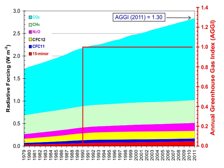Water vapor accounts for the largest percentage of the greenhouse effect, between 36% and 66% for clear sky conditions and between 66% and 85% when including clouds. Water vapor concentrations fluctuate regionally, but human activity does not directly affect water vapor concentrations except at local scales, such as near irrigated fields. Indirectly, human activity that increases global temperatures will increase water vapor concentrations, a process known as water vapor feedback. The atmospheric concentration of water vapor is highly variable and depends largely on temperature, from less than 0.01% in extremely cold regions up to 3% by mass in saturated air at about 32 degrees Celsius.